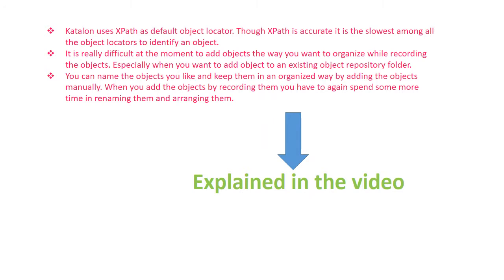The third point is going to be the naming of the objects. When you let the recorder record the objects and store them in the object repository, it will store them with some names you may not like. It is about coding standards — for any project, there will be coding standards that everybody will follow. Those coding standards will be jeopardized if you let Katalon record the objects. But this can be achieved easily if you add the objects manually and store them with the naming convention that all team members follow.